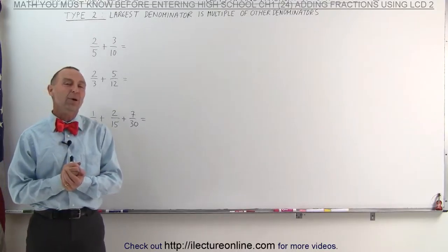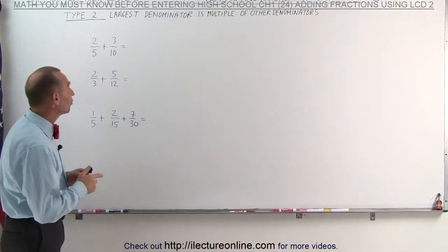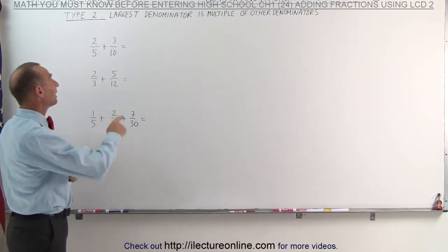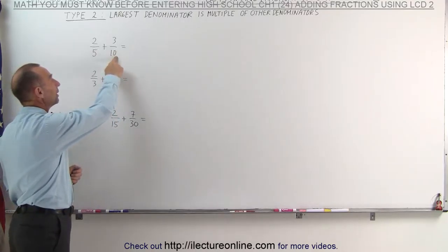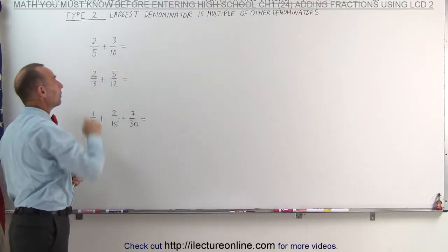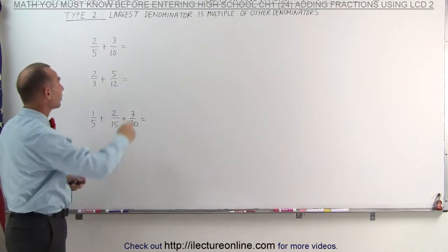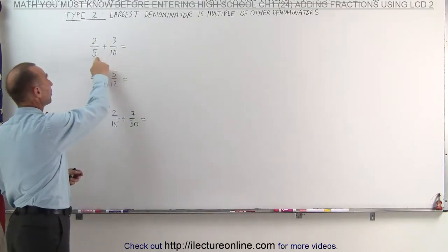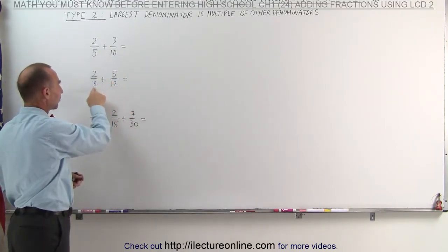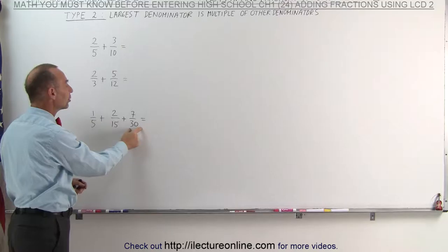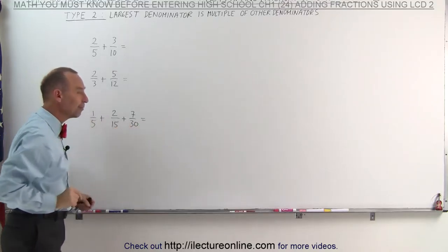Welcome to Electron Online. When you take a look at these fractions, you will notice that the denominator of the largest one is a multiple of the denominator of the smaller ones. Here, 10 is a multiple of 5, 12 is a multiple of 3, and 30 is a multiple of both 15 and 5.